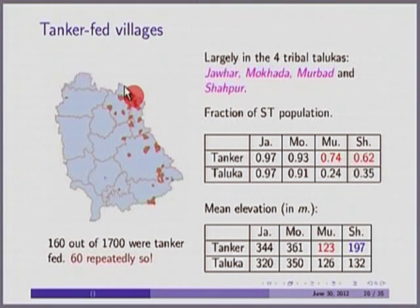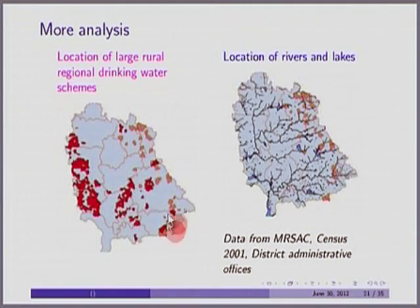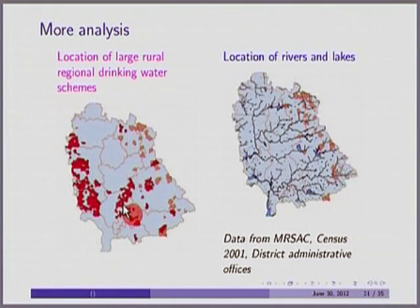We started with drinking water as a technical problem, but now we see there may be a social problem as well. When I showed this to the collector, he started asking the engineers what is going on. Looking further at mean elevation: in Shapur, tanker-fed villages are roughly 60 meters higher than average — likely a technical problem. In Murbar, tribal and non-tribal villages are at the same height, but tribal villages are not getting water — likely a social problem. The schemes are all on the western side of the district, while the intense need is on the eastern side. There has not been much investment on the eastern side, which may explain the drinking water stress.